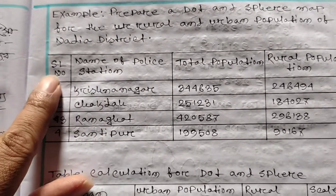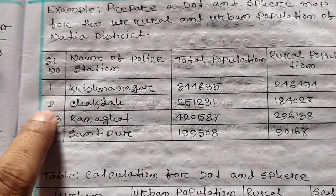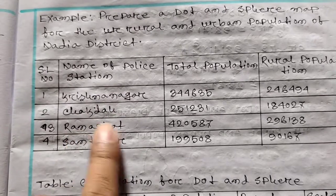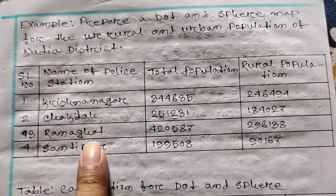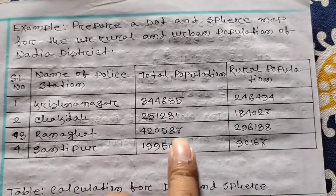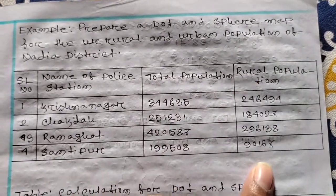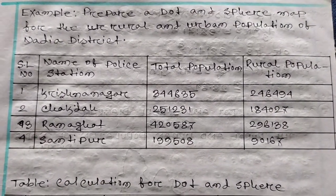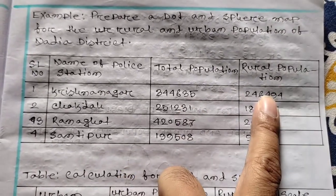The map of Nodiyaristic includes the name of the police station, the total population, and universities.